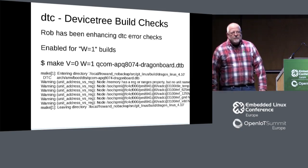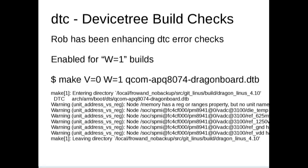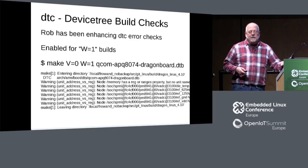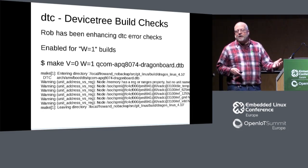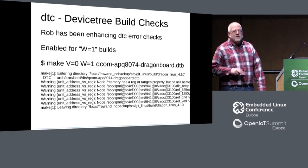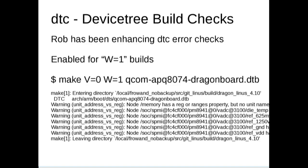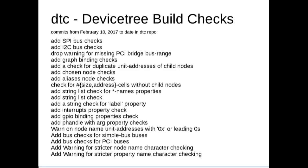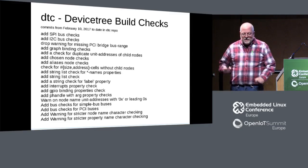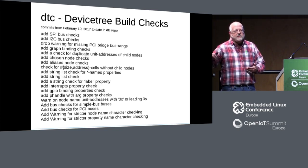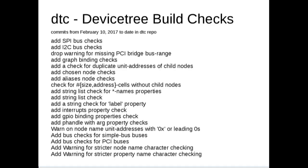One thing to be aware of when building device tree sources — especially if you're a couple of kernel versions back — is that Rob has been very actively adding additional compile-time checks. This makes things clearer and catches issues earlier in the build process rather than at boot time. If you jump forward three or four kernel versions, you'll likely start seeing a whole lot more warnings when you compile your device tree source. Try compiling with a newer device tree compiler and work out those warnings ahead of time.